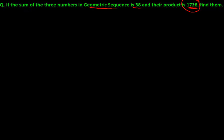This is a similar type of problem we used to do in arithmetic sequence — now we're doing the same type in geometric sequence. We have to choose the three numbers very wisely, because to solve any problem in geometric sequence we need the first term and the common ratio, and from the given information we have to extract either the common ratio or the first term.